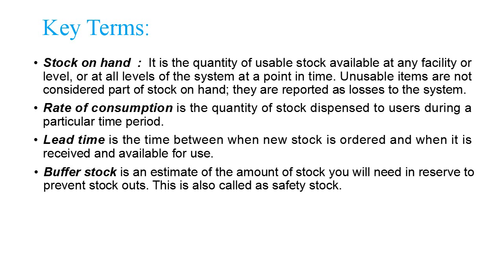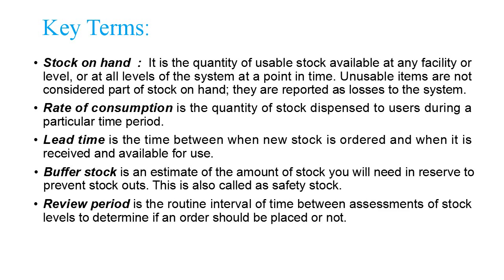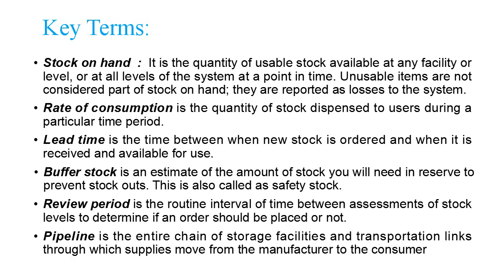Buffer stock is the reserve stock or the safety stock to prevent stock outs. Review period is the routine interval of time between assessment of stock levels to determine when to place the order. Pipeline is the entire chain of storage facilities and transportation links through which the drugs move from the manufacturer to the consumer. Losses includes the expired products, theft, and damaged products.